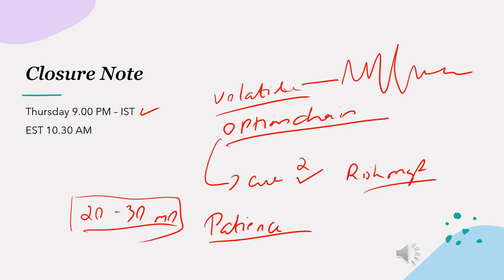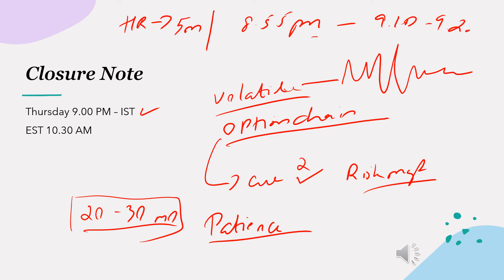If you want to make a high-risk trade, you can take the position 5 minutes before the report and close it during the initial volatile period — for example, enter at 8:55 PM and close by 9:10 or 9:20 PM. However, in this scenario you should have a solid reason for your conviction on the direction, otherwise it can turn into pure gambling and hurt your capital very badly.